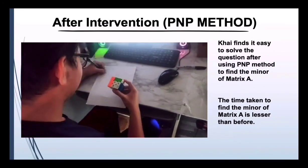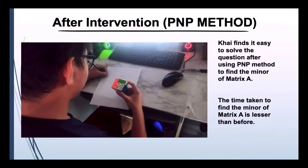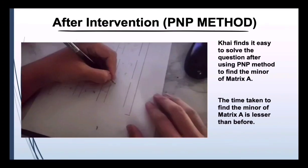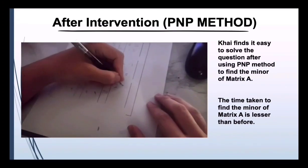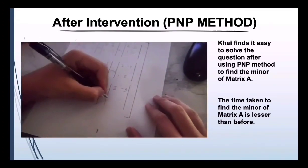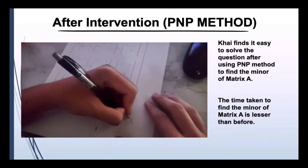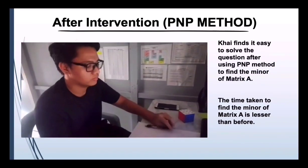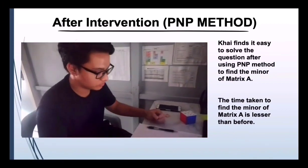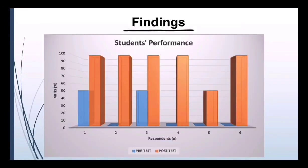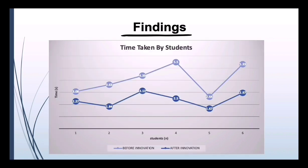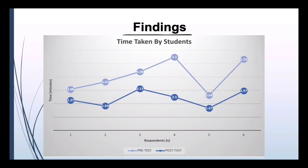Students find it easy to solve the questions after using the PNP method to find the minor of matrix A. The time taken to find the minor of matrix A is lesser than before. Students' performance has clearly improved after using the PNP method, and the time taken to complete the test has also reduced.